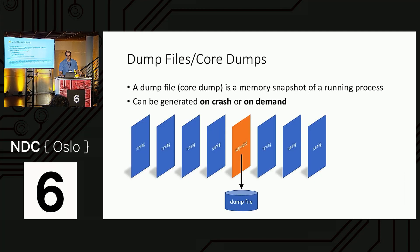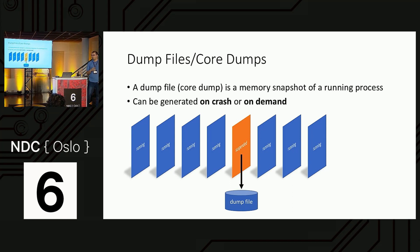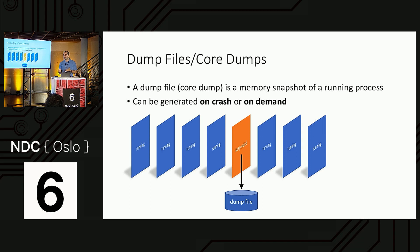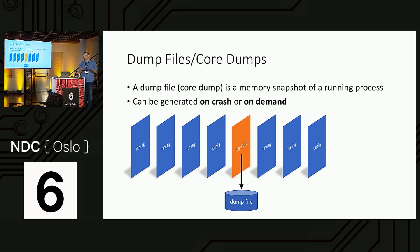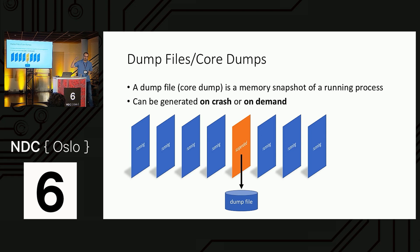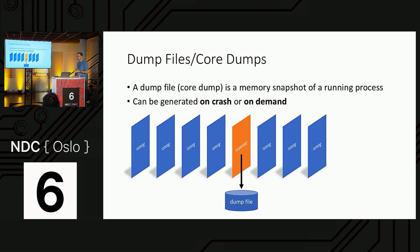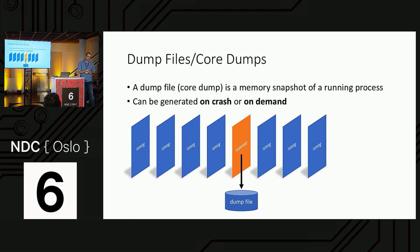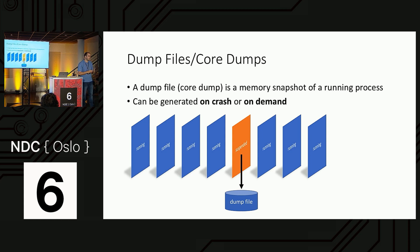We'll start with core dumps or dump files. A core dump is a memory snapshot of a running process — it has a bunch of threads and you can attach to the process at a particular moment, suspend it, and write out the process memory to a file. This can happen on demand or on crash when there's an unhandled exception or signal. Most people recognize core dumps as crash dumps, but you can generate them whenever you want based on arbitrary triggers.